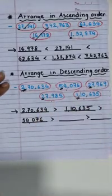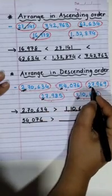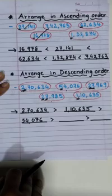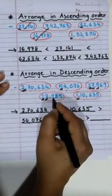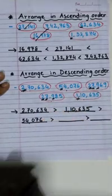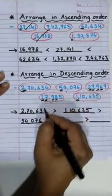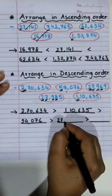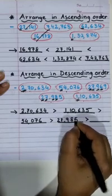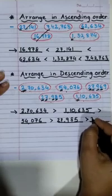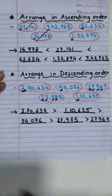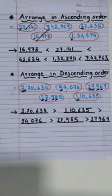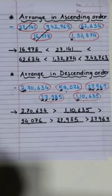Both of these have 2 in the beginning, so we will compare the next digit: 7 and 7 — same again. No problem, we will compare the next one: 9 and 9 — no worries. The next digit: 6 and 8, so yes, this one is bigger. 27,985 is bigger than 27,969. Easy to solve, right? Ascending is smallest to biggest. Descending, biggest to smallest.